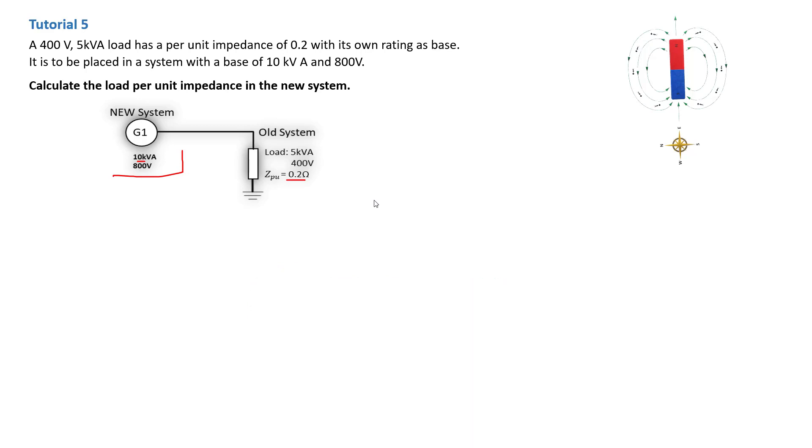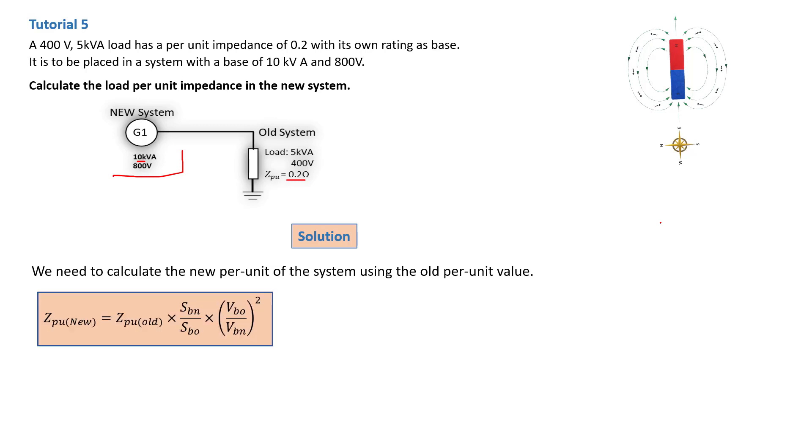Moving forward, the solution is we are basically being asked to calculate the new per unit system using the old per unit value. We know the general formula for the per unit. If you've been doing a lot of per unit problems, you know there is one general formula: Z per unit new equals Z per unit old times S base new...